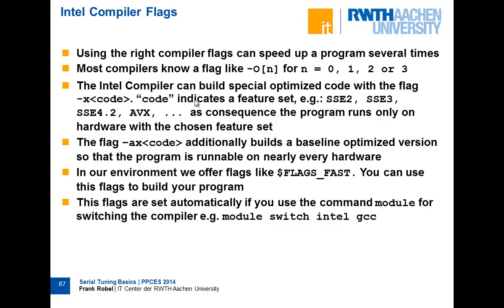In the lab after the next presentation, you have the chance to reproduce this. There's also a second part of the lab about vector-matrix multiplication, which is a comparable problem. Now I want to talk about general compiler flags, because it's the next possibility for increasing speed. The memory access improvement is a factor of two, three, or four — even more — and compiler flags can give another two, three, or four times speedup. So it's very important to think about this.